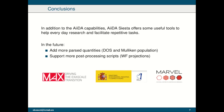I hope I have shown you that in our AiiDA-SIESTA package, in addition to the AiiDA capabilities, we offer some useful tools that we hope can be very valuable for everyday research, because they help to perform repetitive tasks that are necessary during the research process. In the future, what we want to do is to add more parsed quantities starting from the density of states and the Mulliken population, and of course support more post-processing scripts.